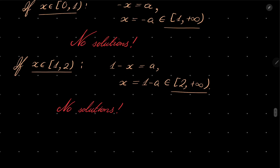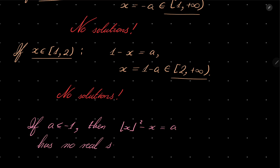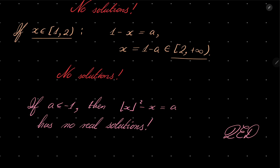So all in all, that implies that if a is less than or equal to minus 1, then floor of x squared minus x equals a has no real solutions, as we wished to show. That closes our proof — QED. You may also want to draw a graph of our function; you will see that the minimum is not attained — the infimum of our function is minus 1, but it is not attained, so our equation has no solutions. That's it. Thank you for watching, and I will see you next time. Goodbye.